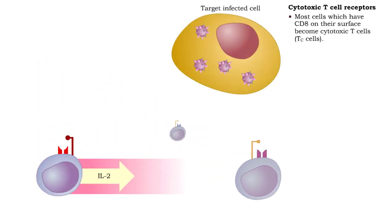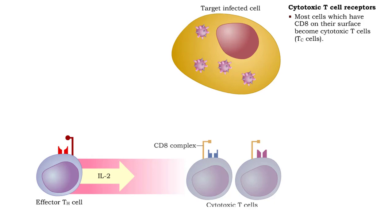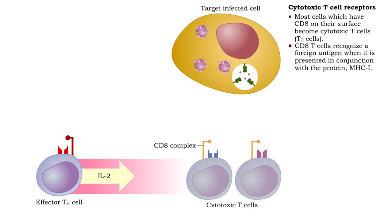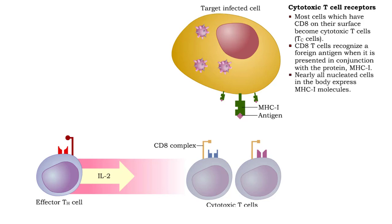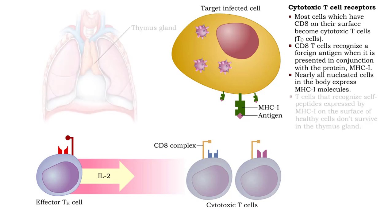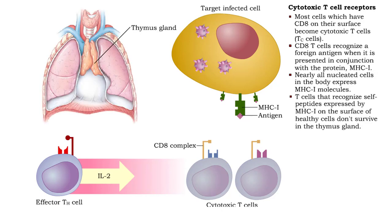Most cells that display CD8 become cytotoxic T cells, also known as killer T cells. CD8 T cells recognize foreign antigens when they are presented in conjunction with major histocompatibility complex class I molecules. Virtually all nucleated cells in the body, including antigen-presenting cells and lymphocytes, express MHC class I molecules. T cells that recognize self-peptides expressed by class I MHC on the surface of healthy cells don't survive in the thymus gland.